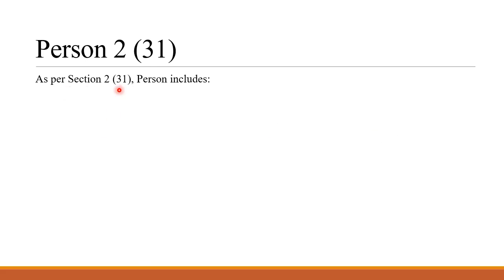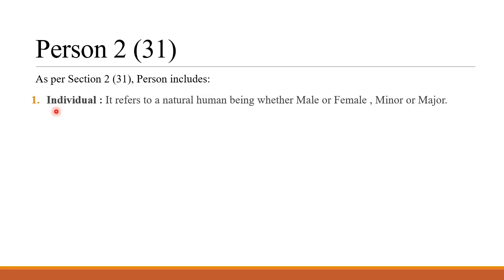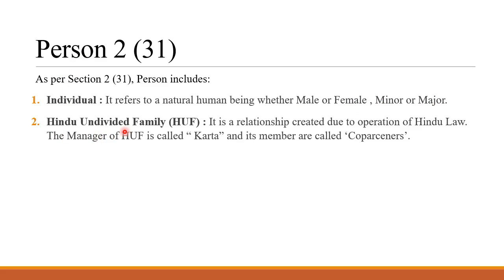The very first definition we need to learn is 'Person' under section 2 subsection 31. When we say who has to pay tax, we always say a person needs to pay tax. But as per direct tax, 'person' includes many more things. As per section 2(31), a person includes: 1. Individual — it refers to a natural human being, whether male or female, minor or major. 2. Hindu Undivided Family (HUF) — it is a relationship created due to the operation of Hindu law. The manager of HUF is called the Karta and his members are called Co-Parceners. Even a HUF is termed as a person in direct tax.